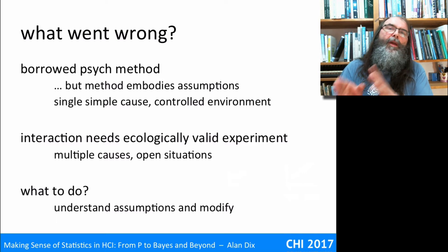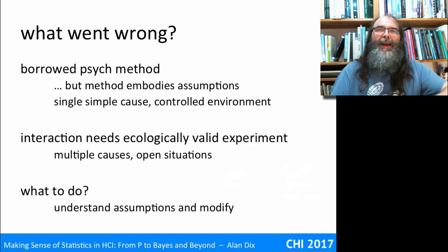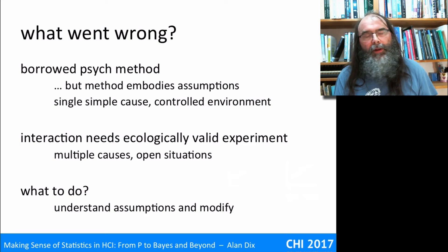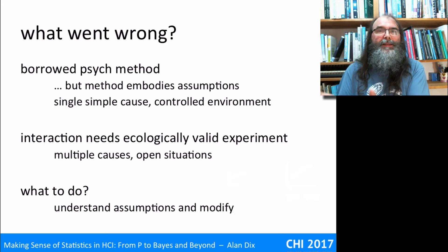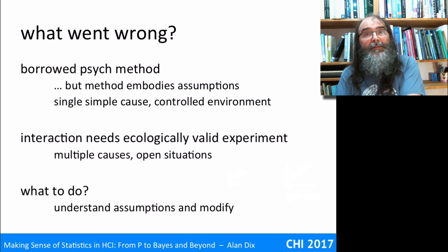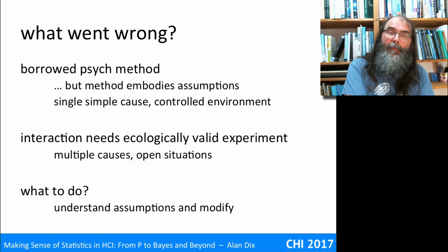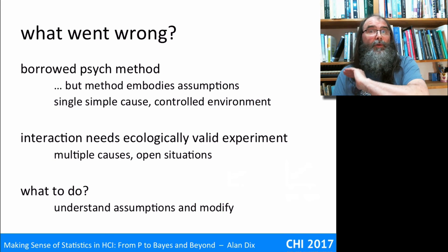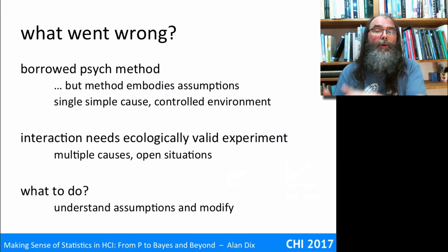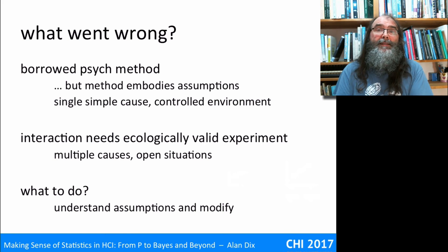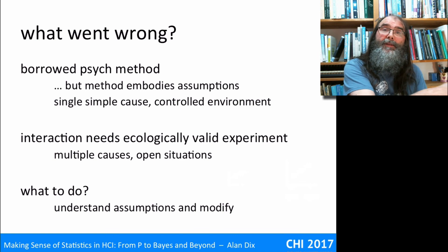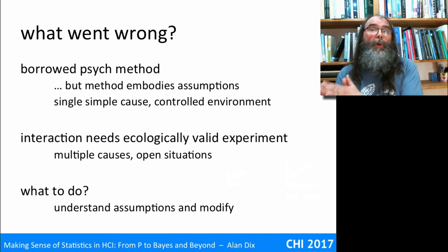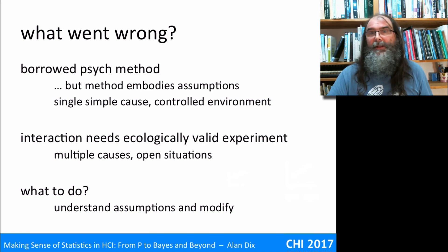So you can't just take the method and expect it to work. You can do the stats, you can do the experiment, but when you look at it at the end you've got to ask different questions. One approach would be to find lots and lots of types of software in each category, but that's probably not going to happen in practice. What you actually do is understand the assumptions and modify your behavior. That's when you do your video analysis and your detailed qualitative analysis, in order to be able to say not just that something happened, but why — and whether it actually corresponds to the thing you were interested in in the first place.